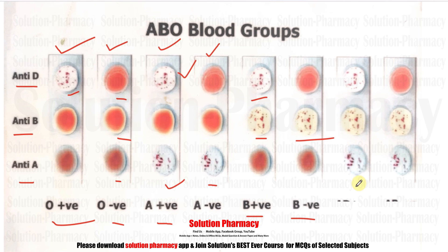In the seventh slide, agglutination reaction occurs in the RBCs of all three drops — to which anti-A, anti-B, and anti-D are added — so the blood group is AB positive. The AB blood group has both A and B agglutinogens (antigens), so it reacts with the antisera containing the corresponding anti-A and anti-B antibodies. Agglutination also occurs with anti-D, confirming the blood group is AB positive.